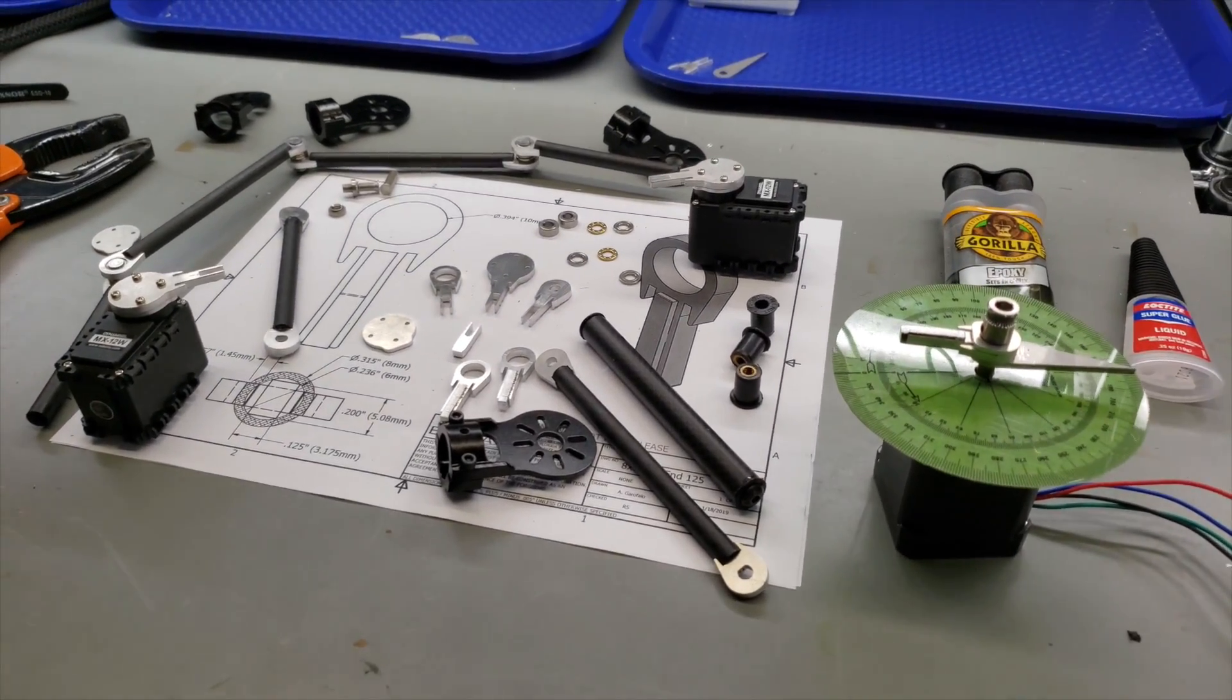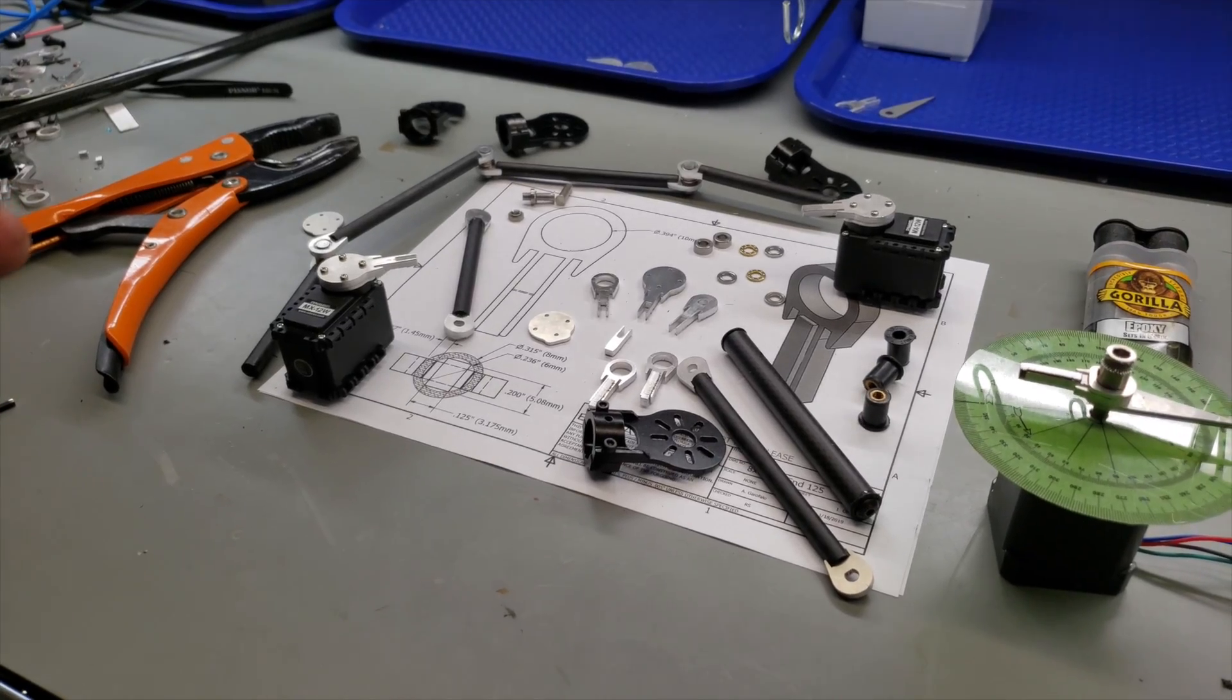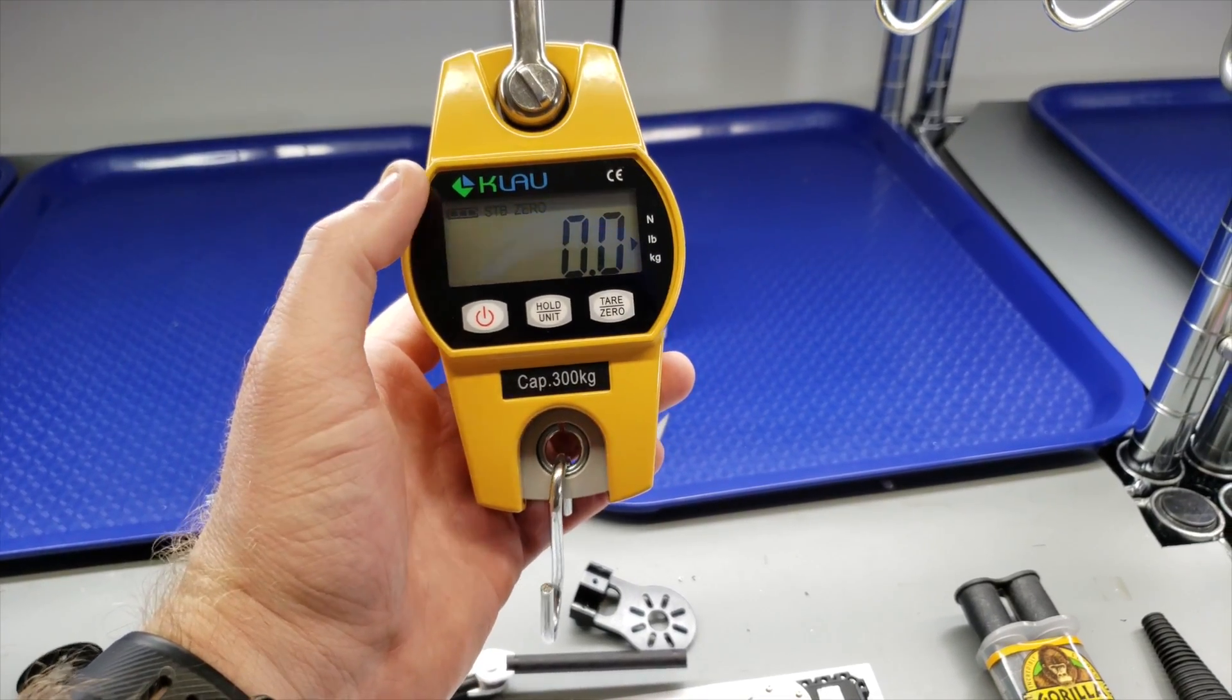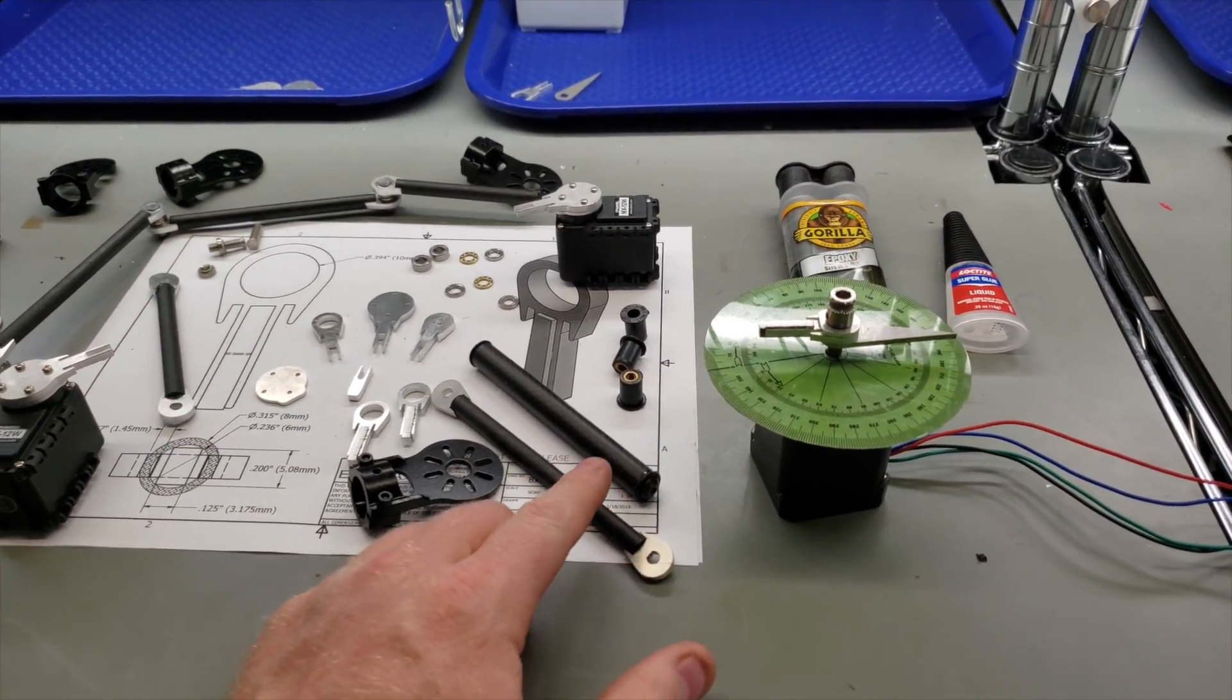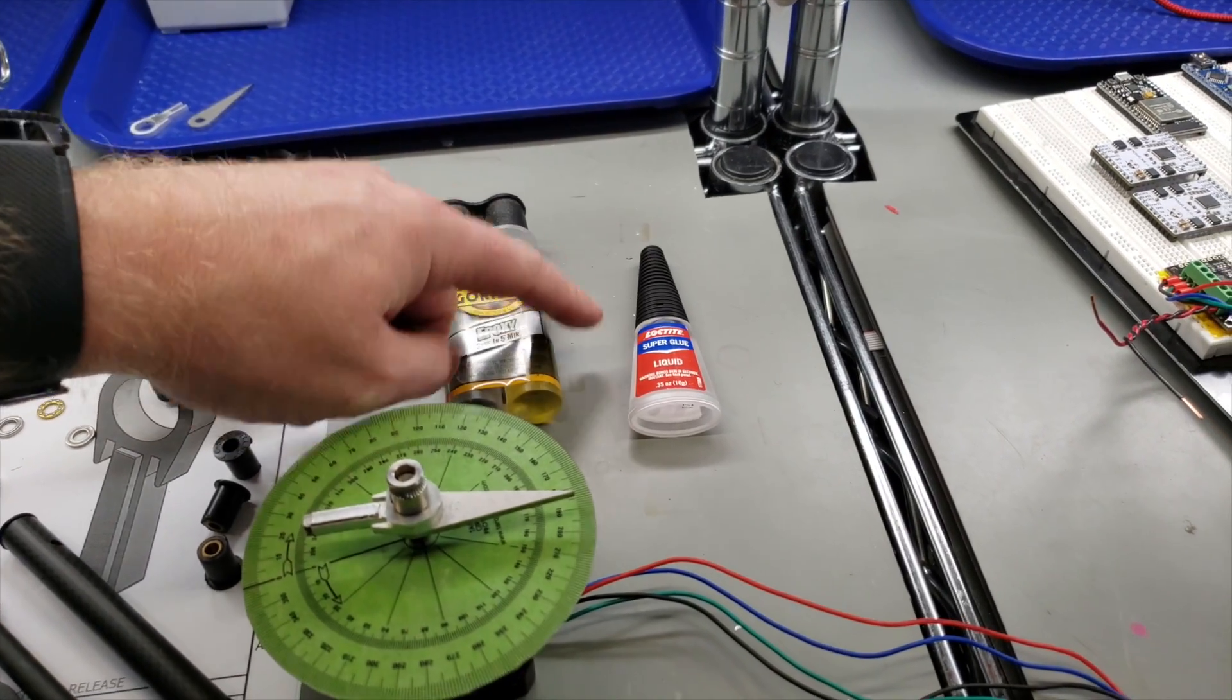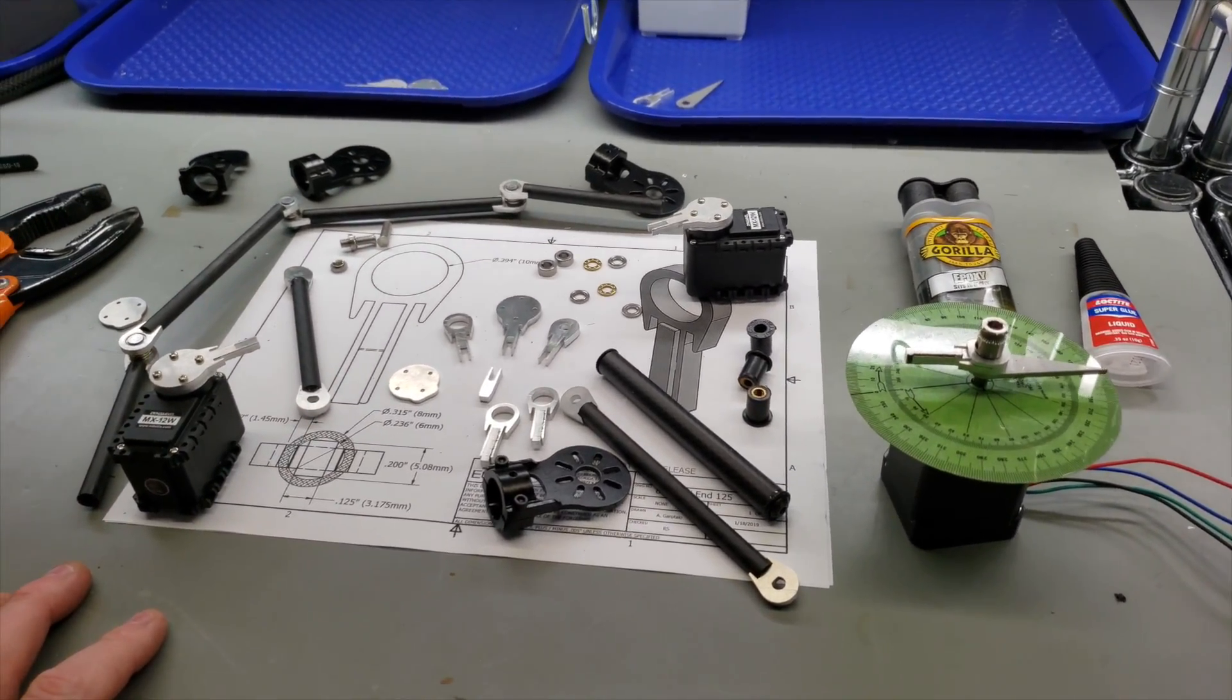Hey guys, so today I'm going to be going over the carbon fiber rod end attachments I designed for the SCAR robot in my last video. And I'm also going to be doing some pullout tests with this weight scale that has a max hold feature. I'm going to test the pullout strength of a rod end attachment without glue, one with epoxy, and then one with super glue just so we can see the differences between the three pullout strengths.